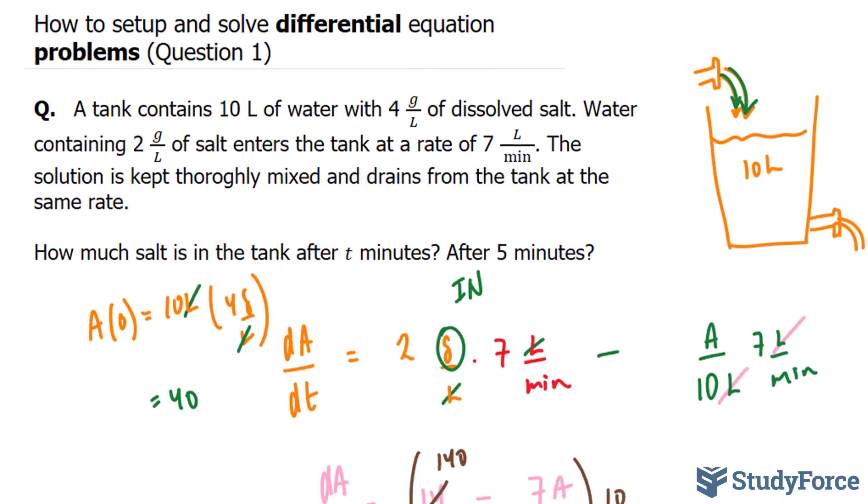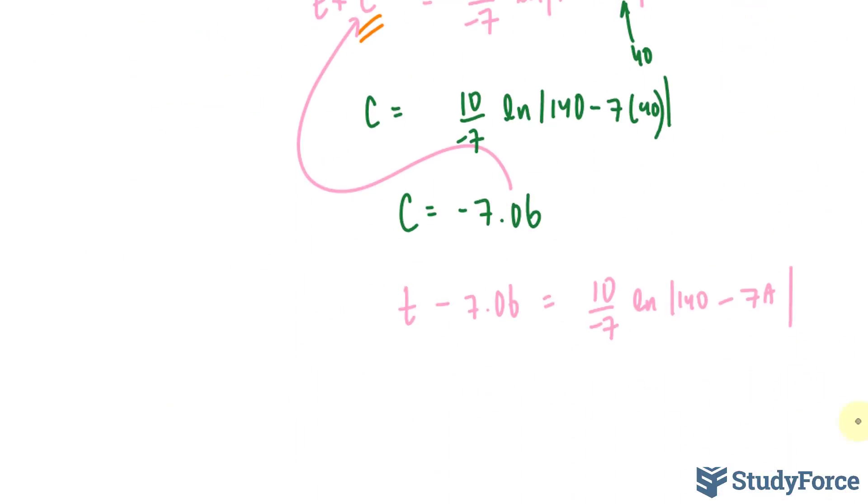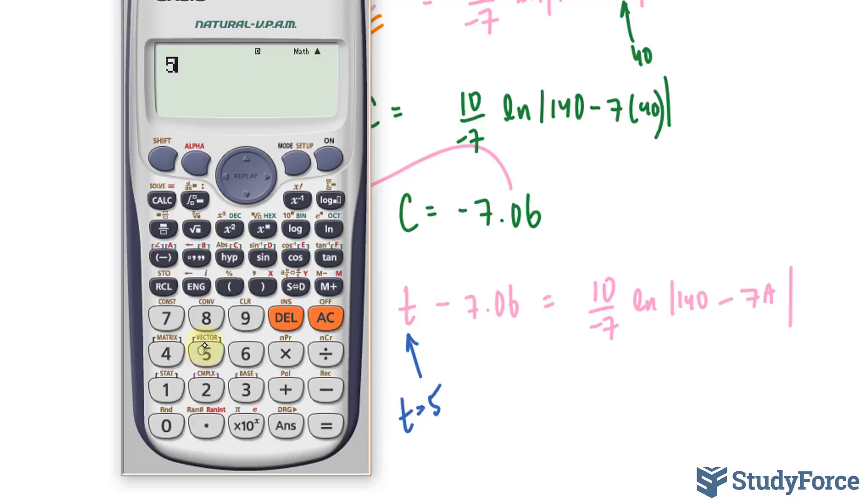Now they're also asking for what happens after 5 minutes. So if I substitute t is equal to 5 in here, and I solve for A, I'll get my answer. So let's go ahead and do that. We have 5 minus 7.06.